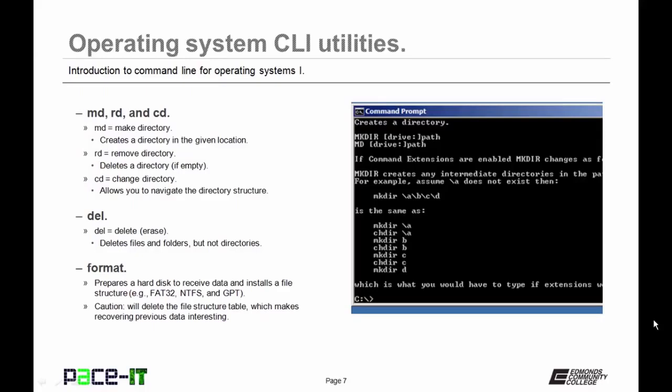Then there's format. This prepares a hard disk to receive data and installs a file structure such as FAT32, NTFS, or GPT. Caution: if you use the format command, it will delete the file structure table, making recovering previous data rather interesting. Now let's move on to some copy commands. The 'copy' command copies a source file or directory to a named destination.